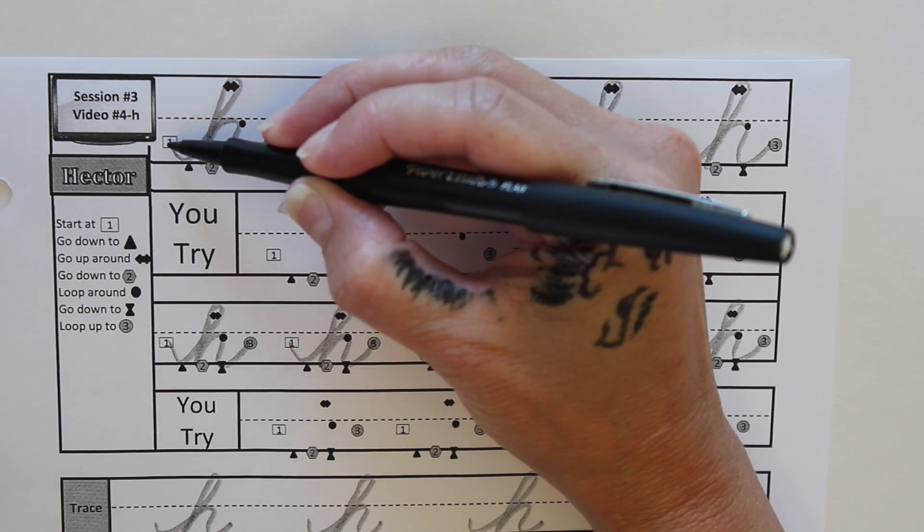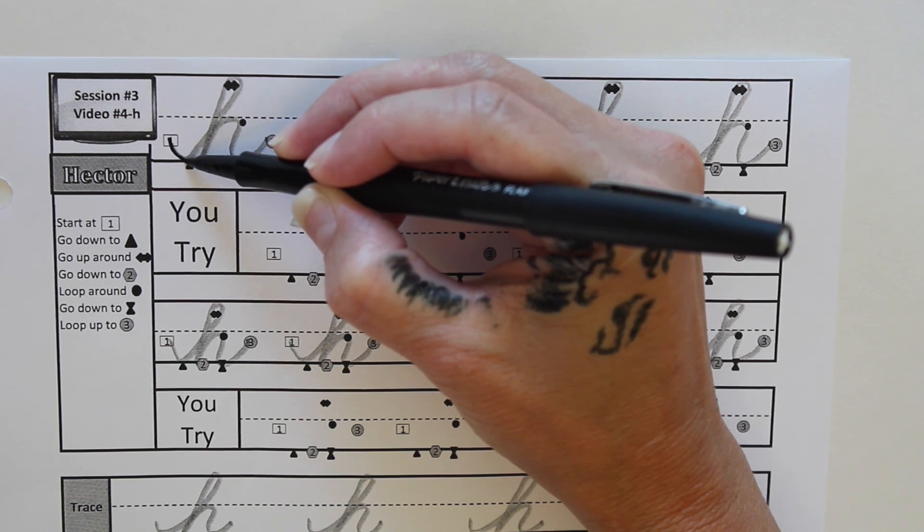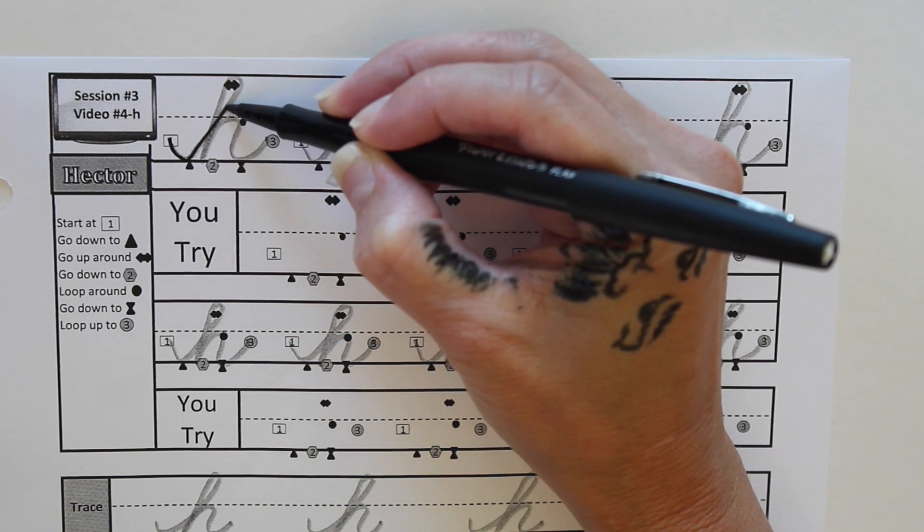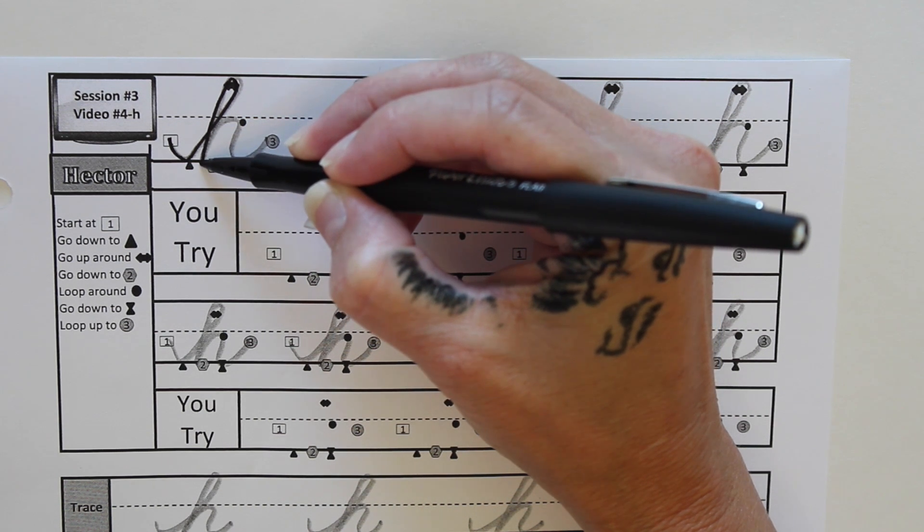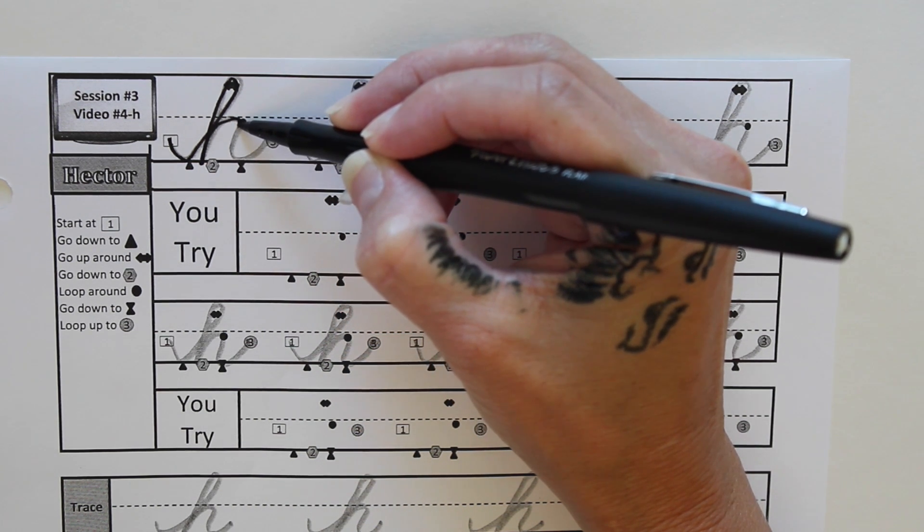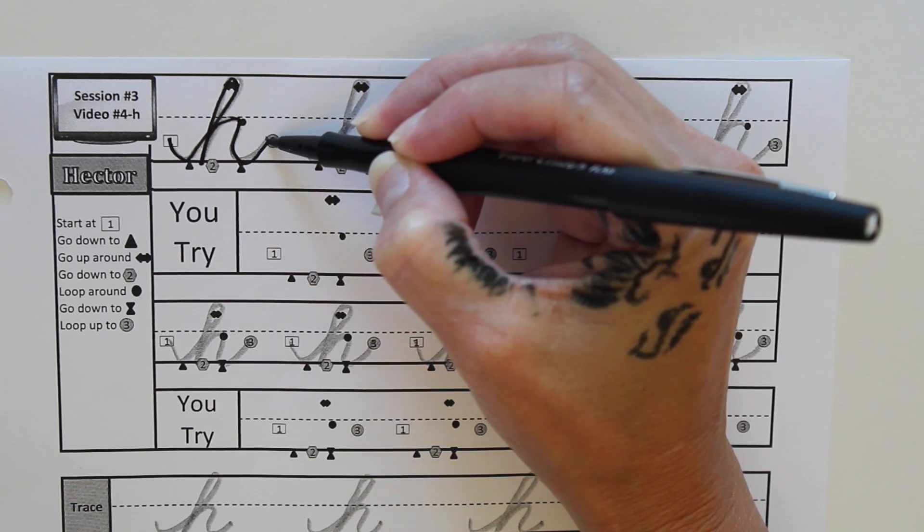Okay, you need to start at the 1. Go down to the triangle. Go up and around the double arrow. Go down to the 2. Loop around the circle. Go down to the double triangle. And loop up to the 3.